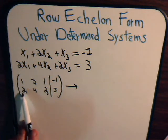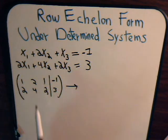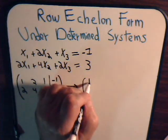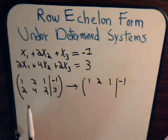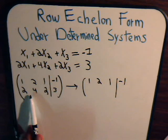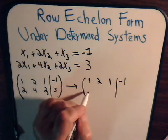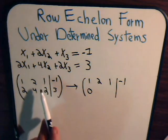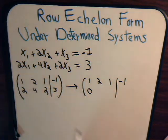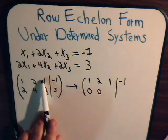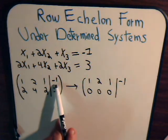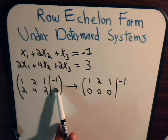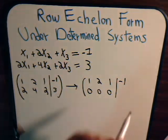Clearly, if this row is multiplied by negative 2 and added to the second row, we get 0. So: negative 2 plus 2 is 0; negative 2 times 2 is negative 4, plus 4 is 0; negative 2 times 1 plus 2 is 0; and negative 2 times negative 1 is 2, plus 3 is 5.